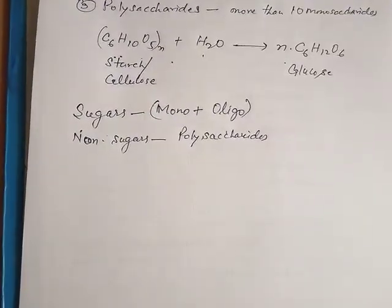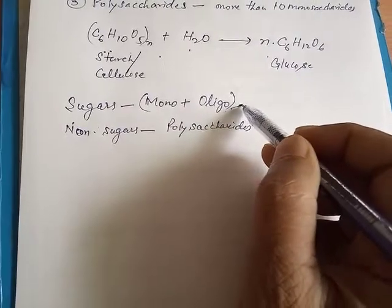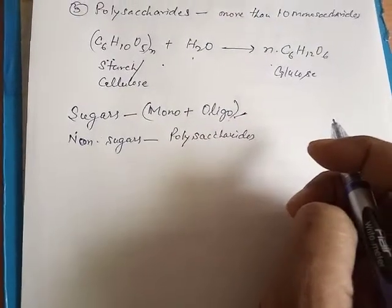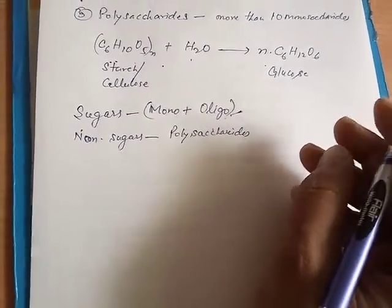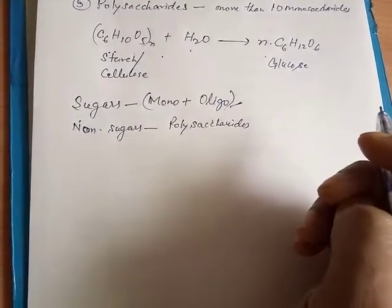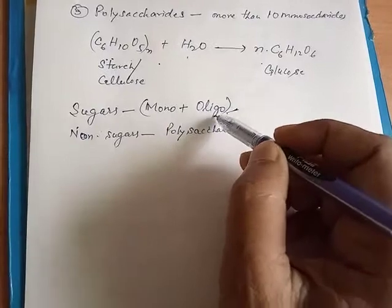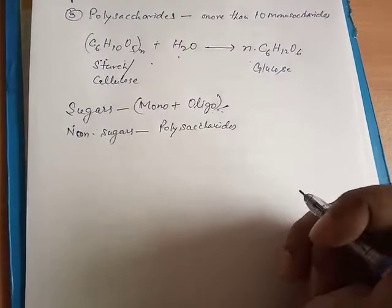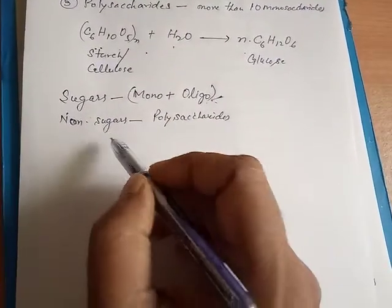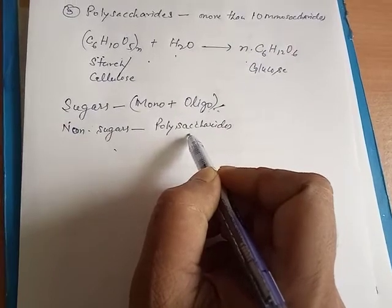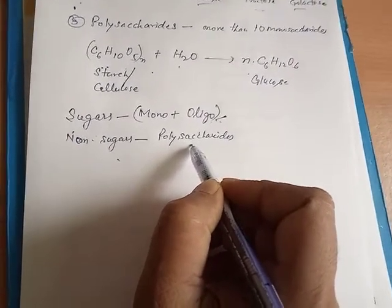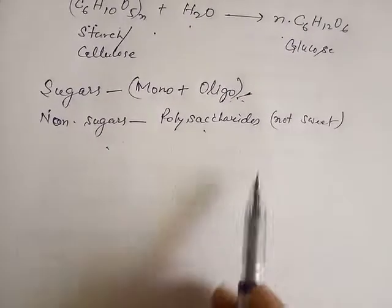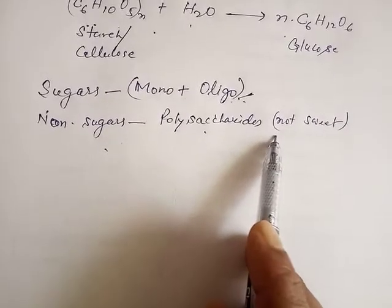We can also observe the taste differences: monosaccharides like glucose, table sugar, fructose (honey sugar), and lactose (milk sugar) all taste sweet. Similarly, oligosaccharides like sucrose also taste sweet. But polysaccharides like starch or cellulose do not taste sweet — they are non-sugars and are not sweet in taste.